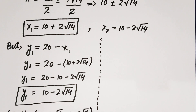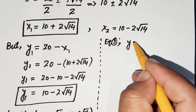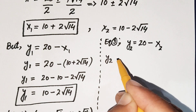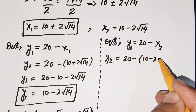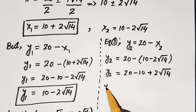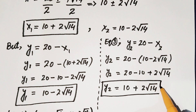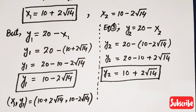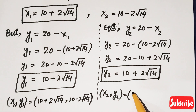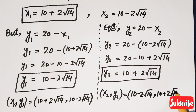For x2, we use equation 3 again: y2 equals 20 minus x2 equals 20 minus (10 minus 2 times square root of 14), which gives y2 equals 10 plus 2 times square root of 14. So the second solution pair is x2 equals 10 minus 2 root 14, y2 equals 10 plus 2 root 14.